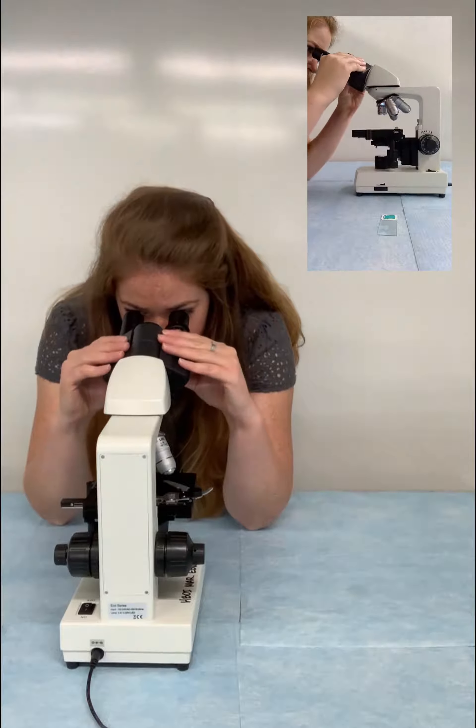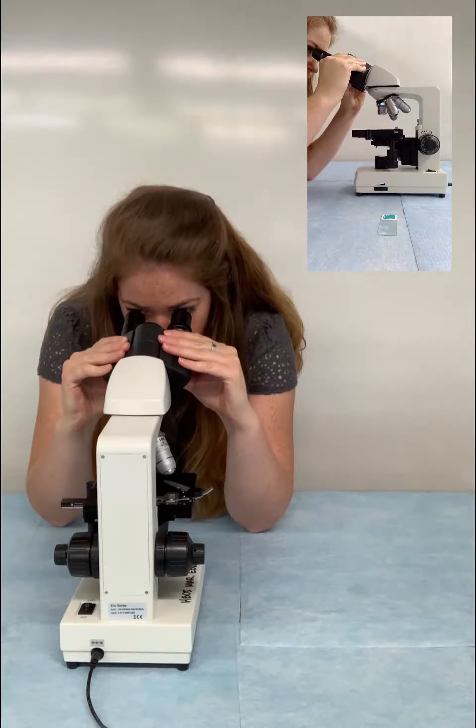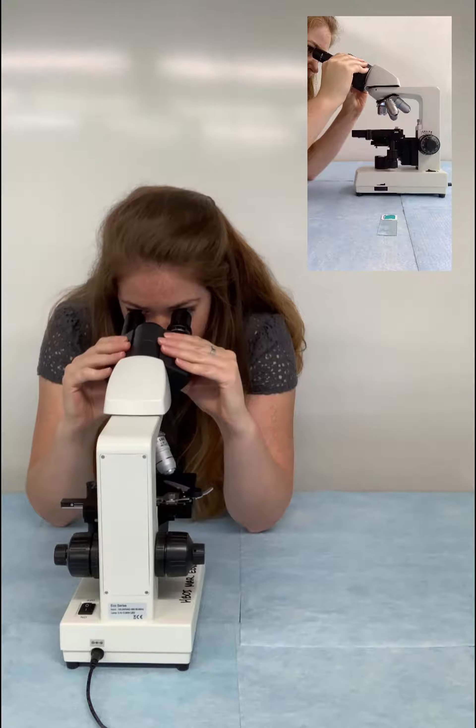Once your microscope is at a good spot on the table, you're ready to adjust the oculars or eyepieces. You can move the oculars apart or together depending on how far apart your eyes are. For me right here is perfect. I can see a clear circle of light while keeping both of my eyes open.